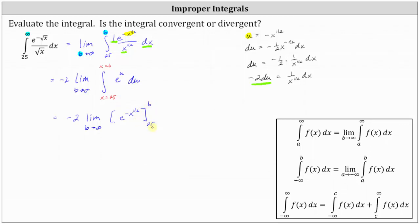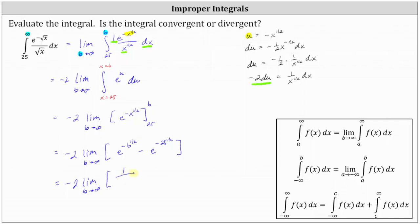For the next step we determine F(b) minus F(25). F(b) is e raised to the power of negative b to the power of one half, minus F(25), which is e to the power of negative 25 to the power of one half. Rewriting using positive exponents and square roots, we have negative two times the limit as b approaches infinity of one divided by e raised to the power of square root of b, minus one divided by e raised to the power of square root of 25, which simplifies to one divided by e to the fifth.